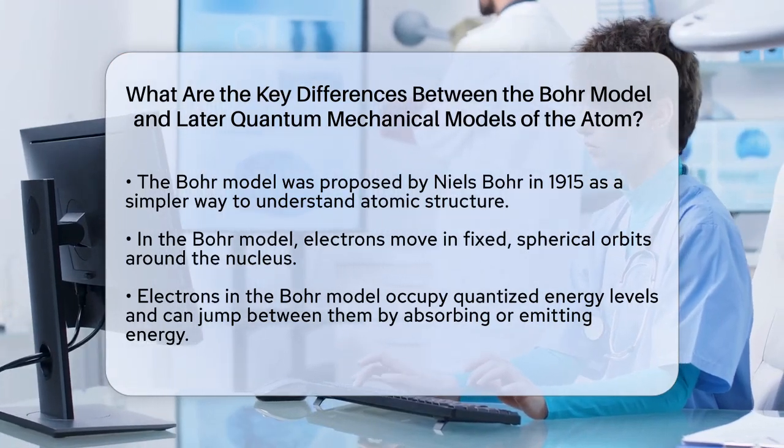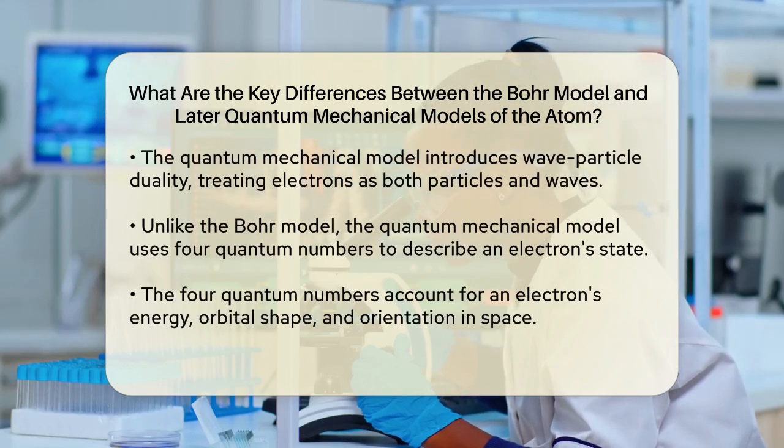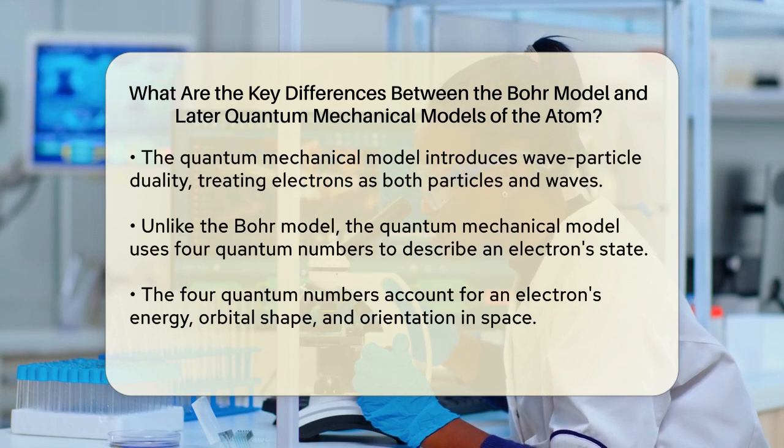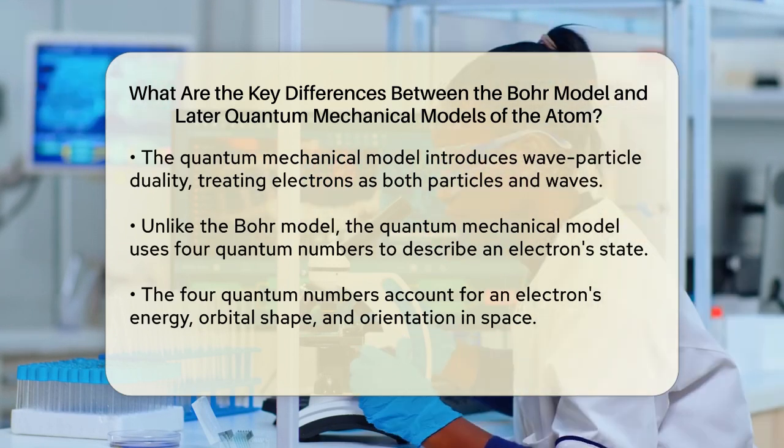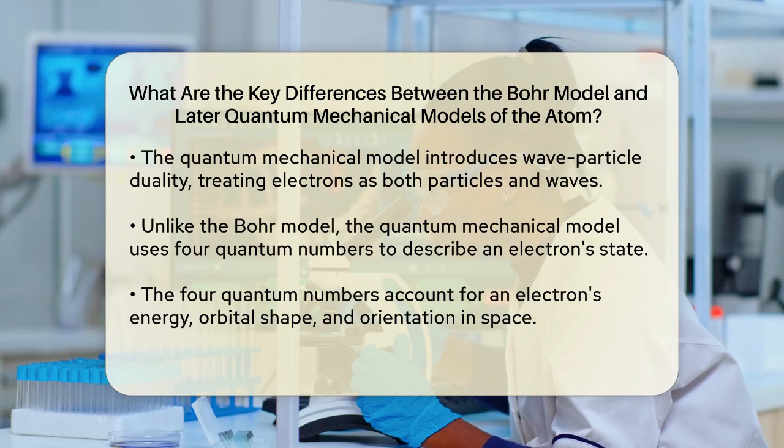Now let's compare this to the quantum mechanical model. In this modern model, electrons are not just particles but also exhibit wave behavior. This is known as wave-particle duality. Unlike the Bohr model, which uses a single quantum number, the principal quantum number, to describe the electron's position, the quantum mechanical model uses four quantum numbers to specify an electron's state. These numbers help describe the electron's energy, shape of its orbital, and its orientation in space.